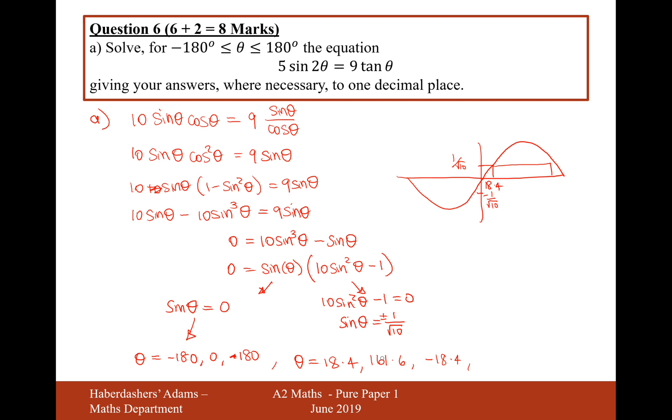And then do minus 180. Add it to get this solution up here. So that will be minus 161.6. So there we are. We have seven solutions to this equation here. 18.4, 161.6, and then the negatives of those. And 0, 180, and minus 180 as well.